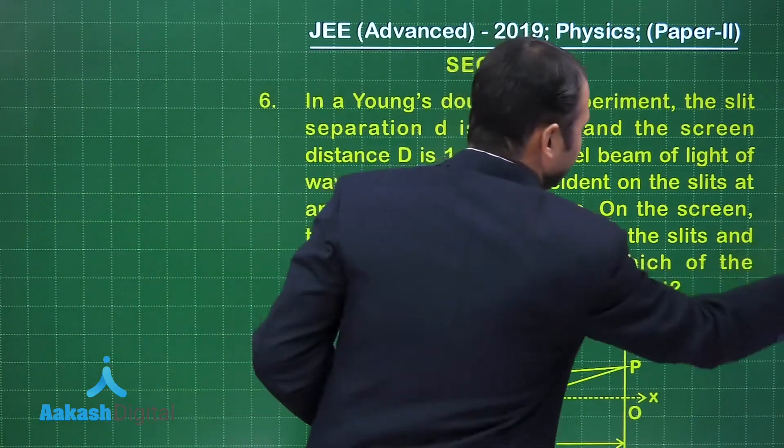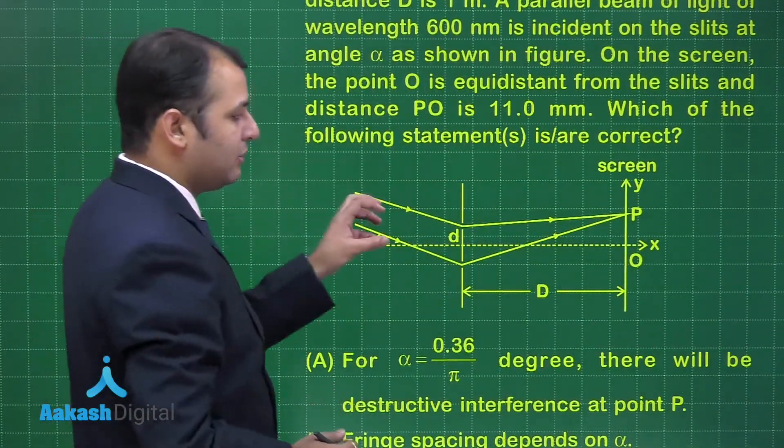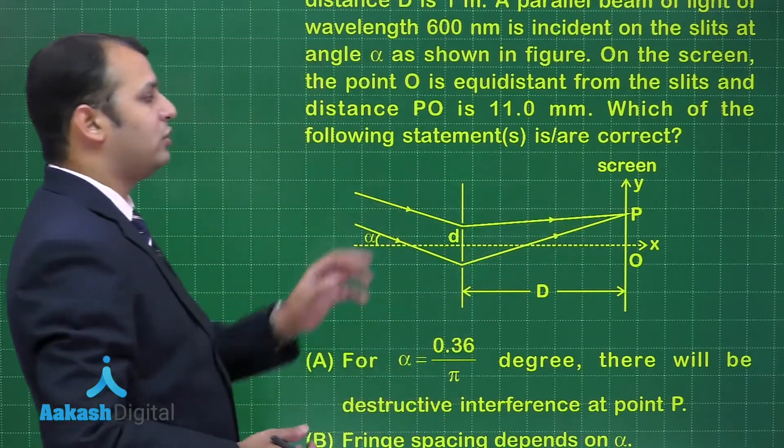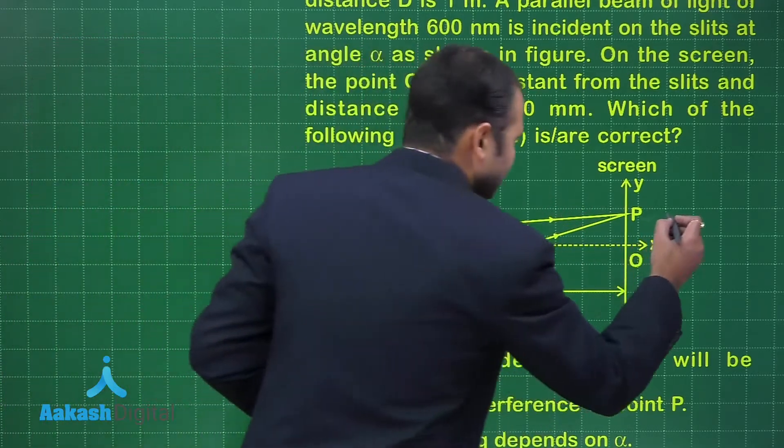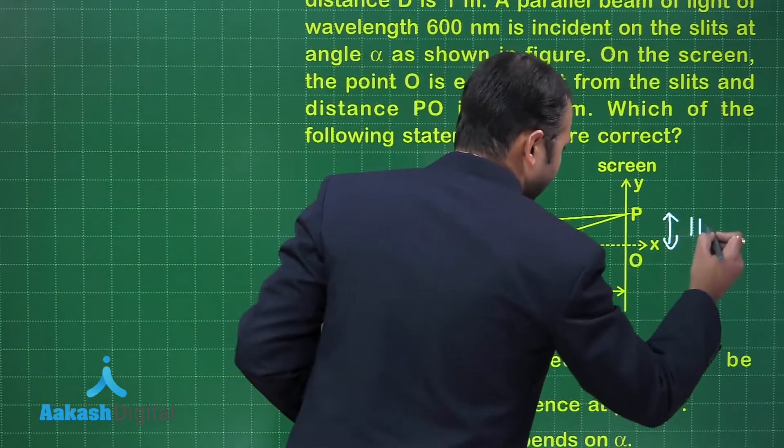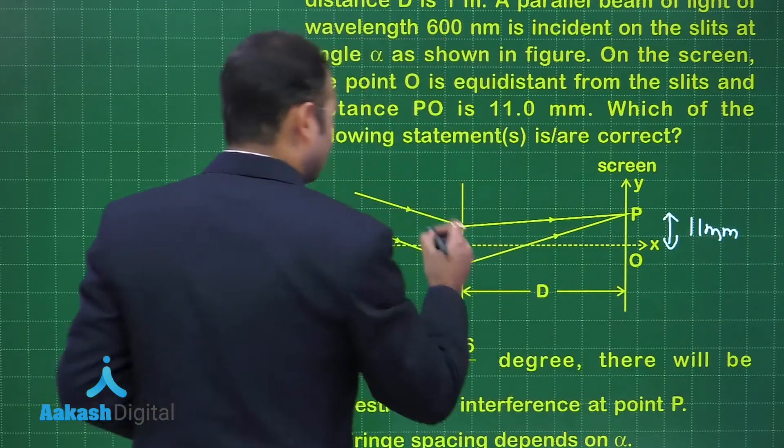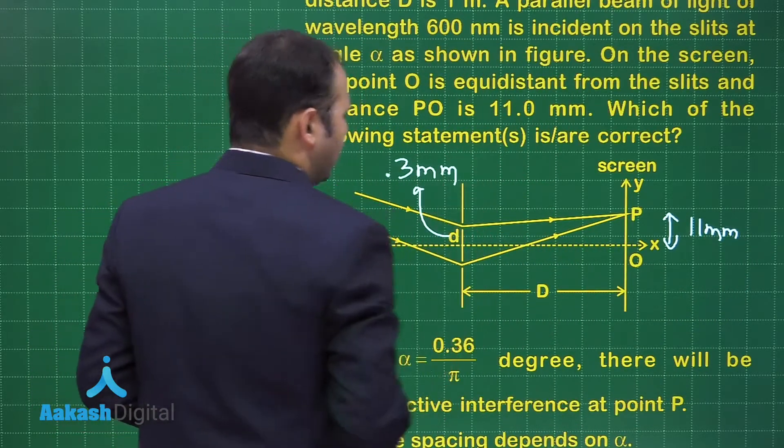When you see the diagram here, these are the light rays which are coming and this is the point P which we are talking about. This distance is given to us as 11 mm, and this distance is given to us as 0.3 mm.